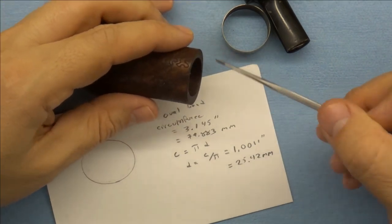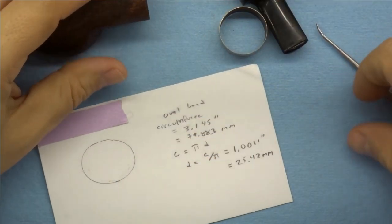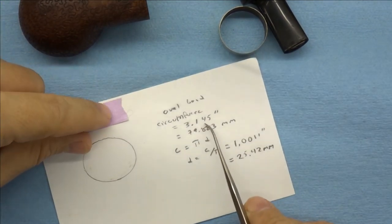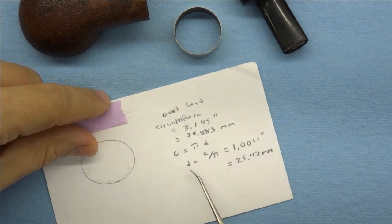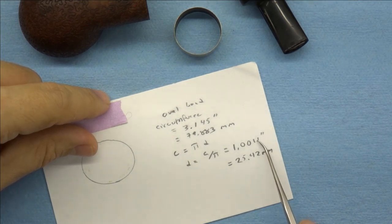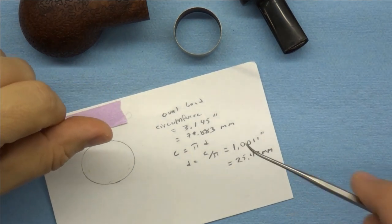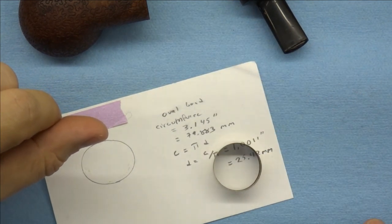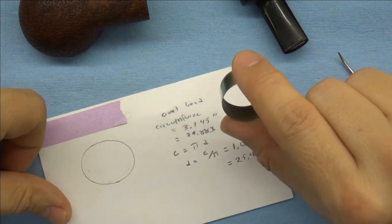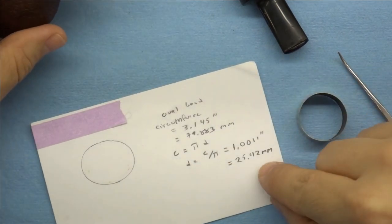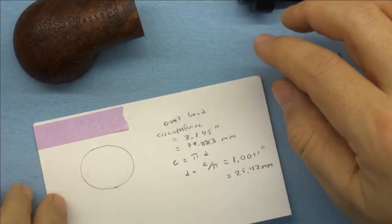I measured the circumference around here just by putting a piece of tape around it and cutting the tape so that it was flush from one end to the other, taking that off and measuring it. And I got a value of 3.145 inches, converted that to millimeters, because these bands are all measured in millimeters. Used the equation for the circumference of a circle to actually go ahead and calculate the diameter, and I wound up with 25.42 millimeters. So, I got a 25 millimeter band, which is fortunate because that's the largest one that I could find.